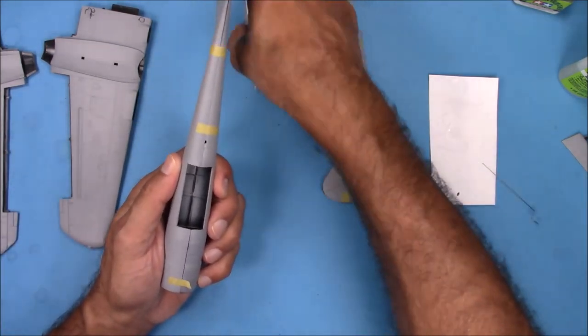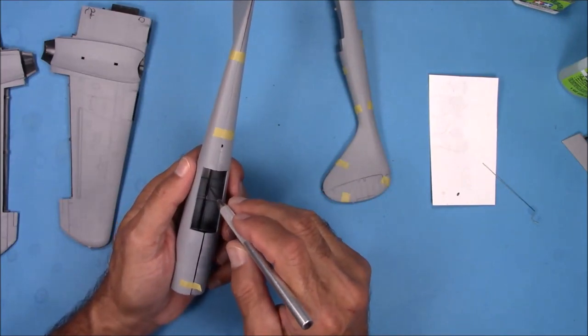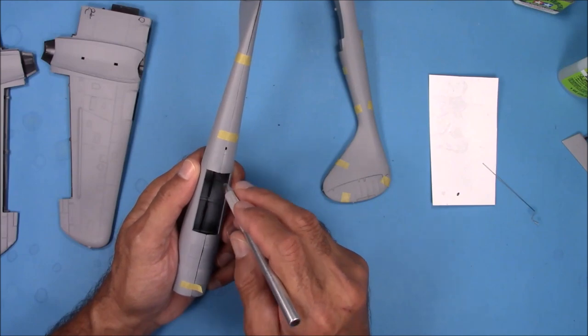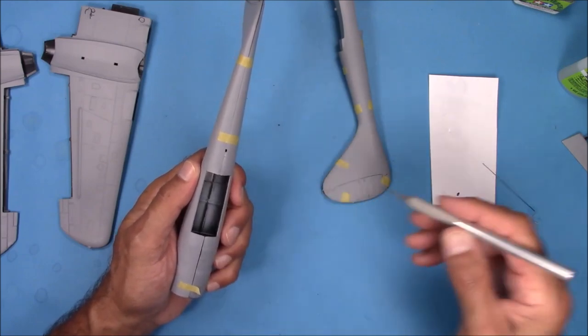If you want to cover the seam on the inside here, after you glue the parts together, just put a strip of plastic along here, here, and here, and that'll cover those seams.